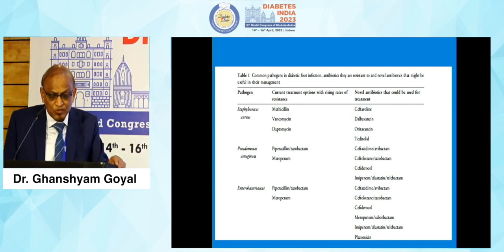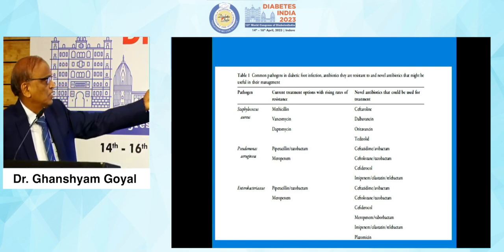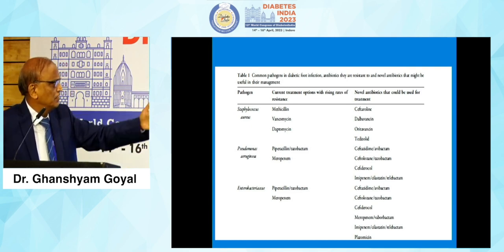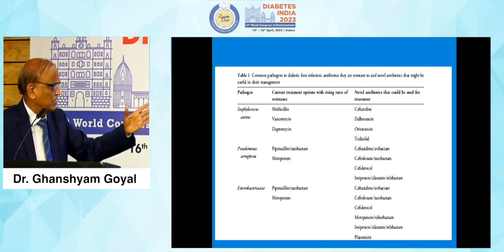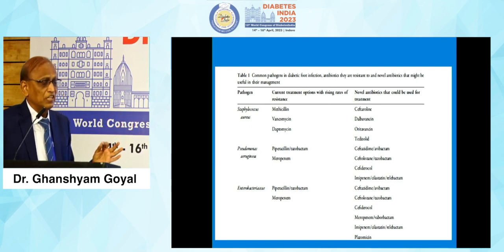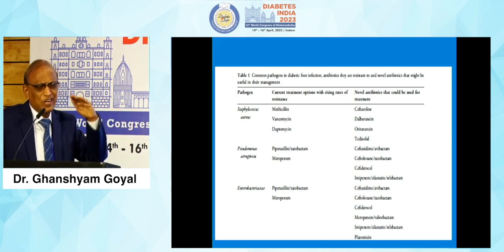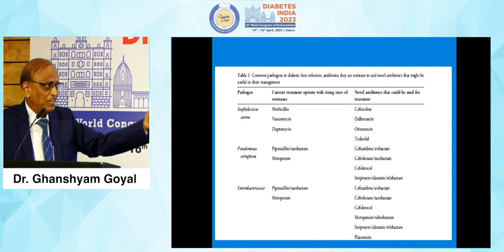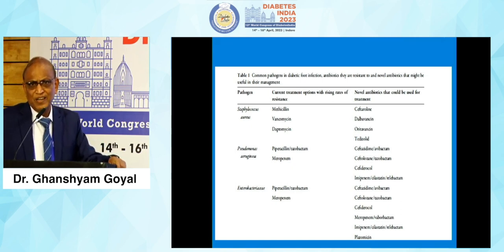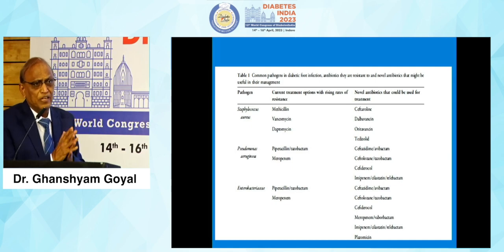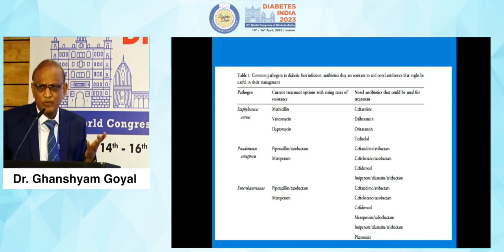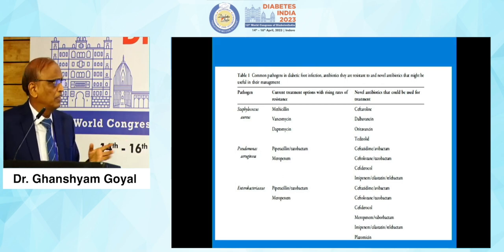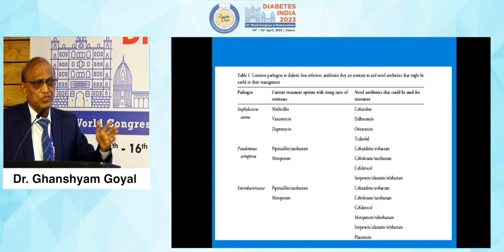Novel antibiotics that could be used include ceftaroline, dalbavancin, tedizolid, and plazomycin — which is an aminoglycoside but very costly. The cost of a 5-day course alone runs into lakhs of rupees, and for moderate to severe infections requiring 2 to 4 weeks of therapy, this is prohibitive. These are also not yet approved by the FDA or the Diabetic Foot Society of India. So these remain antibiotics of the future, and using antibiotics indiscriminately will only worsen resistance.